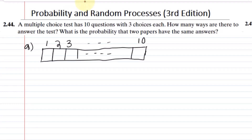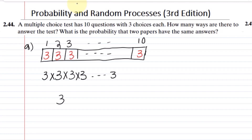In the first question, how many choices do I have? I will have 3 choices. In the second question, again 3 choices, then 3, and up to the last question also 3 choices. So that gives us 3 raised to the power 10, which is the total number of choices. The answer to part one is 3 raised to power 10.